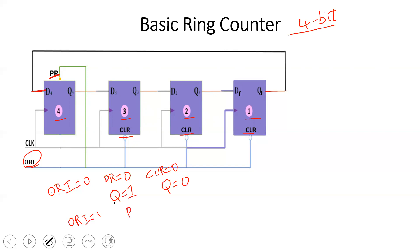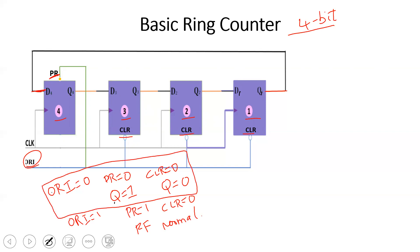The overriding input is: preset 1 and clear 1 — then the flip-flop is in normal working mode. Preset 0 makes the flip-flop output 1. Clear 0 makes the flip-flop output 0. So basically, this is the step for the flip-flop counter.